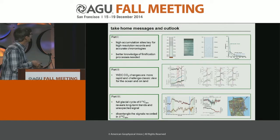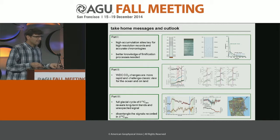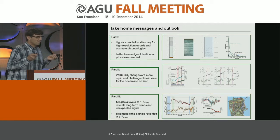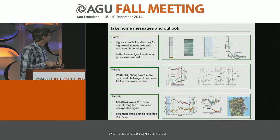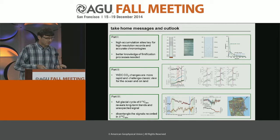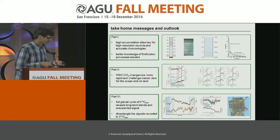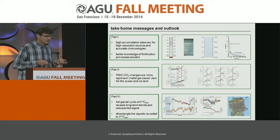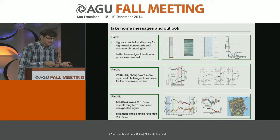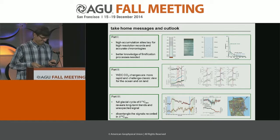In summary, I had three parts. First: you need the proper ice core for each purpose — a high accumulation site for centennial resolution, as possible with Waste Divide, and low accumulation sites for getting really long records. Second: high-resolved CO2 records really allow us to think more deeply about the processes. Third: carbon isotopes help constrain the interpretation of these records.